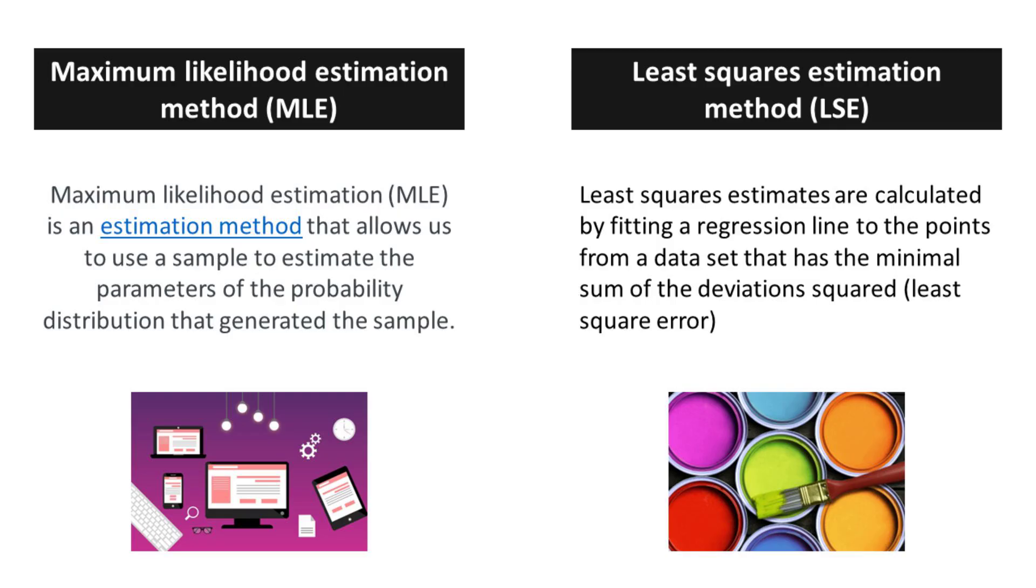Maximum likelihood estimation (MLE) is a powerful statistical method used to estimate the parameters of a probability distribution based on a given sample. Least squares estimates are a fundamental tool in statistical analysis and regression modeling. By minimizing the sum of the squared deviations between the observed data points and the fitted regression line, least squares estimates provide a robust method for determining the best-fitting line through a set of data.